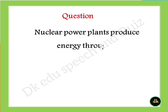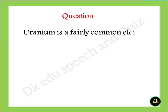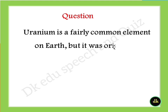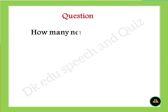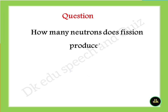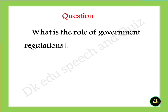Uranium-235 splits when what hits its nucleus? Answer: a neutron. Nuclear power plants produce energy through? Answer: induced fission. Uranium is a fairly common element on earth but it was originally formed? Answer: in stars. How many neutrons does fission produce? Answer: two or three neutrons.